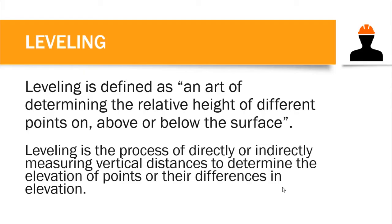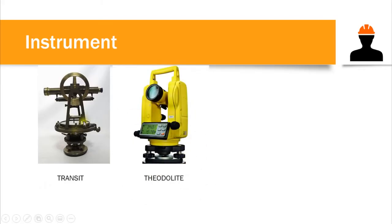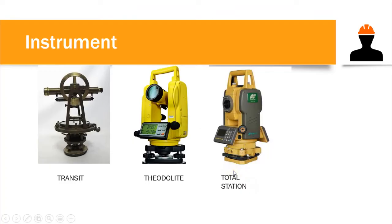In conducting leveling we use different instruments. The transit is the obsolete type where all measurements are read manually. The theodolite is more advanced, with measurements shown digitally. The latest is the total station, which uses laser technology — we don't need a tape measure for horizontal distances because the laser determines distances between two or more points.